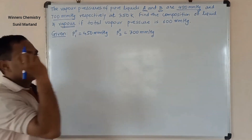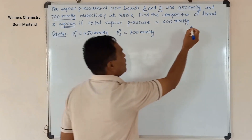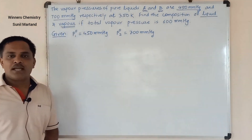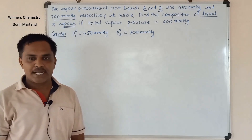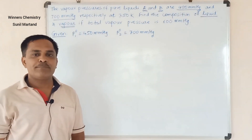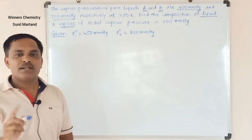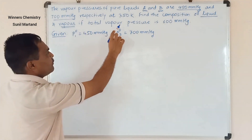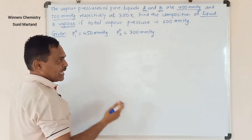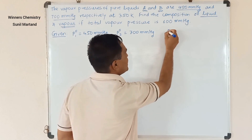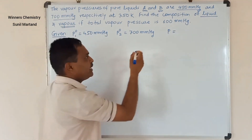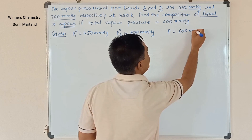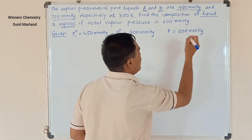In this problem, we are supposed to calculate the composition of both the liquid state and the vapour state. The total vapour pressure of the solution is denoted by P, and P is equal to 600 mmHg. This is the total pressure of the solution.